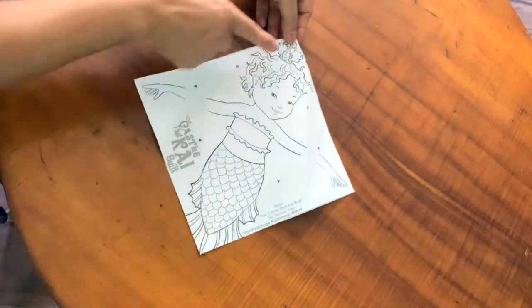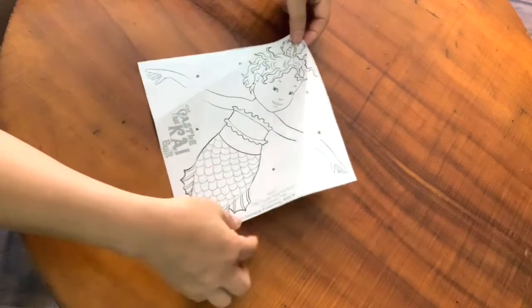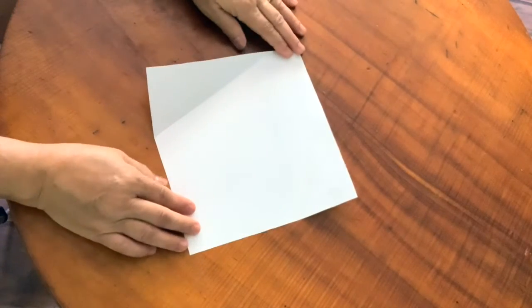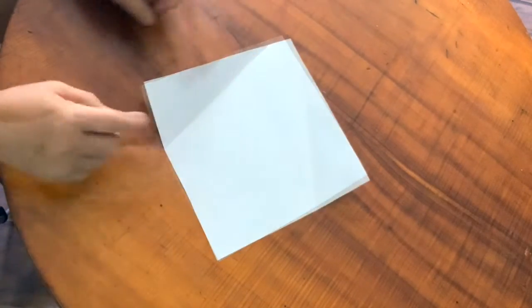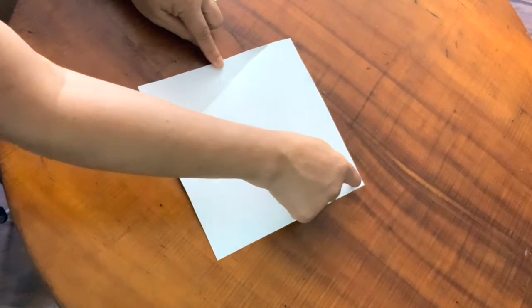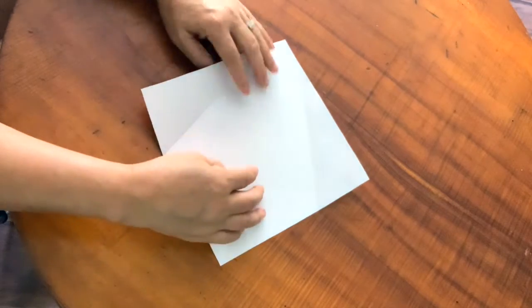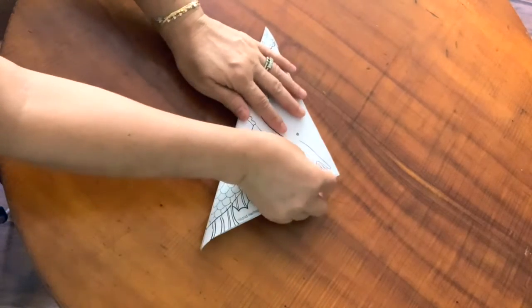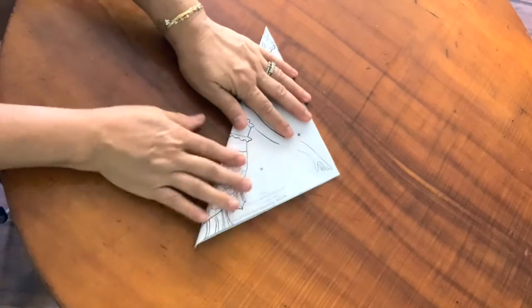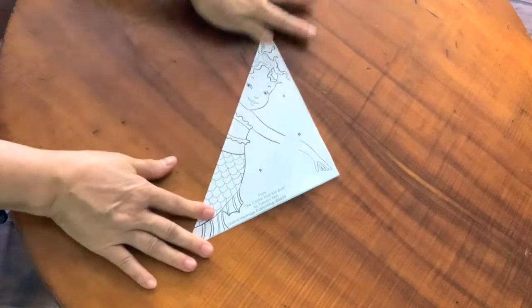You see her head is still up and her tail is still down. We're going to create what's called a kite fold. We're going to fold this corner to this corner so that we create a nice diagonal line down the center. This is just going to be a guideline so that we can create our kite fold. There you go.